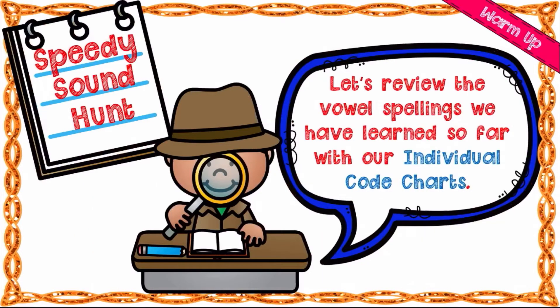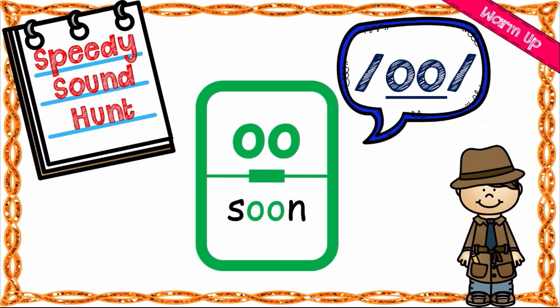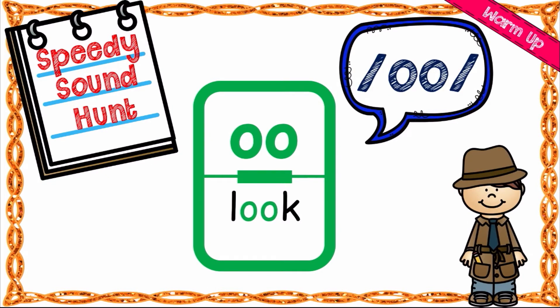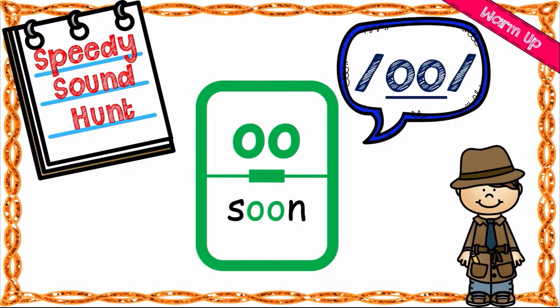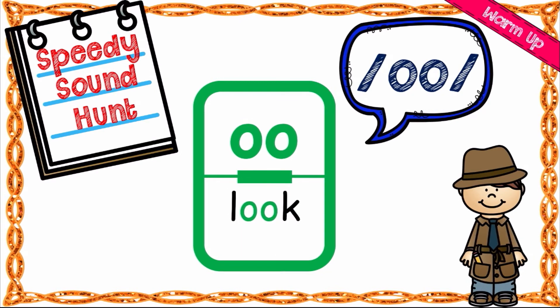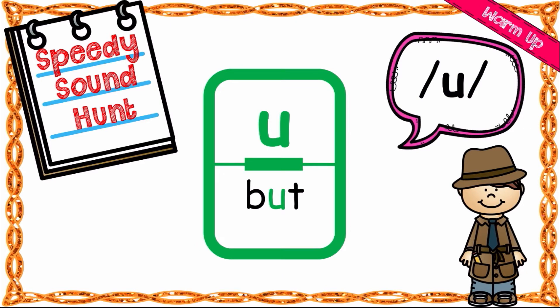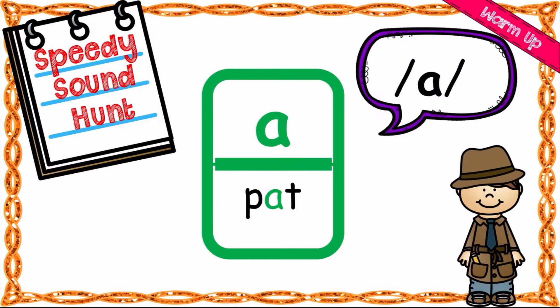Today let's review the vowel spellings we've learned from our individual code charts — let's start the hunt. We have the long 'oo' sound as in 'soon.' Remember, this sound has two spellings but it's still the same sound. The long 'oo' sound has a dash on the wide, and the short one doesn't. So long 'oo' as in 'soon,' and the short 'oo' sound as in 'look' — soon, look.